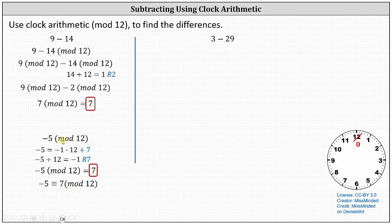To check negative 5 mod 12 using the clock, we start with the hour hand pointing at 0 and go back 5 hours for negative 5. Going back 1, 2, 3, 4, 5 hours, we're again at 7 o'clock, confirming negative 5 mod 12 equals 7.